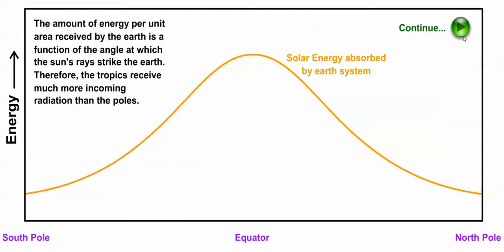The amount of energy per unit area received by the earth depends on the angle at which the sun's rays strike the earth. Therefore, solar heating is at a maximum over the tropics because the intensity of solar radiation is greater over low latitudes, and over the course of a year, the tropics receive much more incoming solar radiation than the poles.